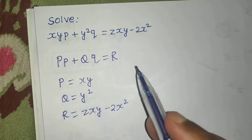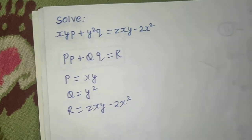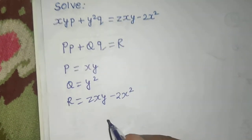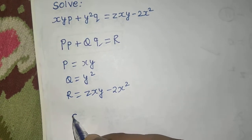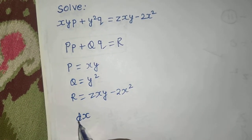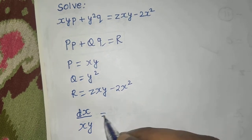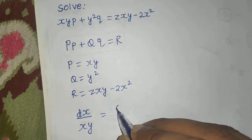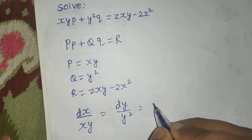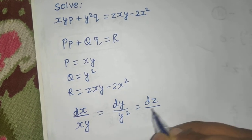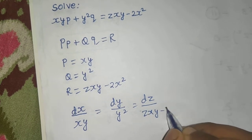The auxiliary equation — also called Lagrange's subsidiary equation — is written as dx by P equals dy by Q equals dz by R. So dx by xy equals dy by y squared equals dz by (zxy minus 2x).